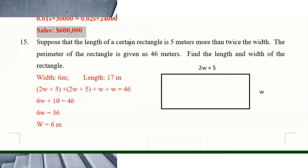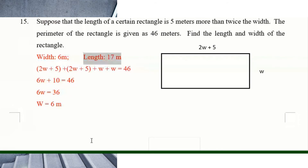Number fifteen: the length of a rectangle is five meters more than twice the width, and the perimeter is 46 meters. Let the width be w; the length is 2w plus 5. Perimeter: (2w plus 5) plus w plus (2w plus 5) plus w equals 46. Solve for w. You get width equals 6 meters and length equals 17 meters.